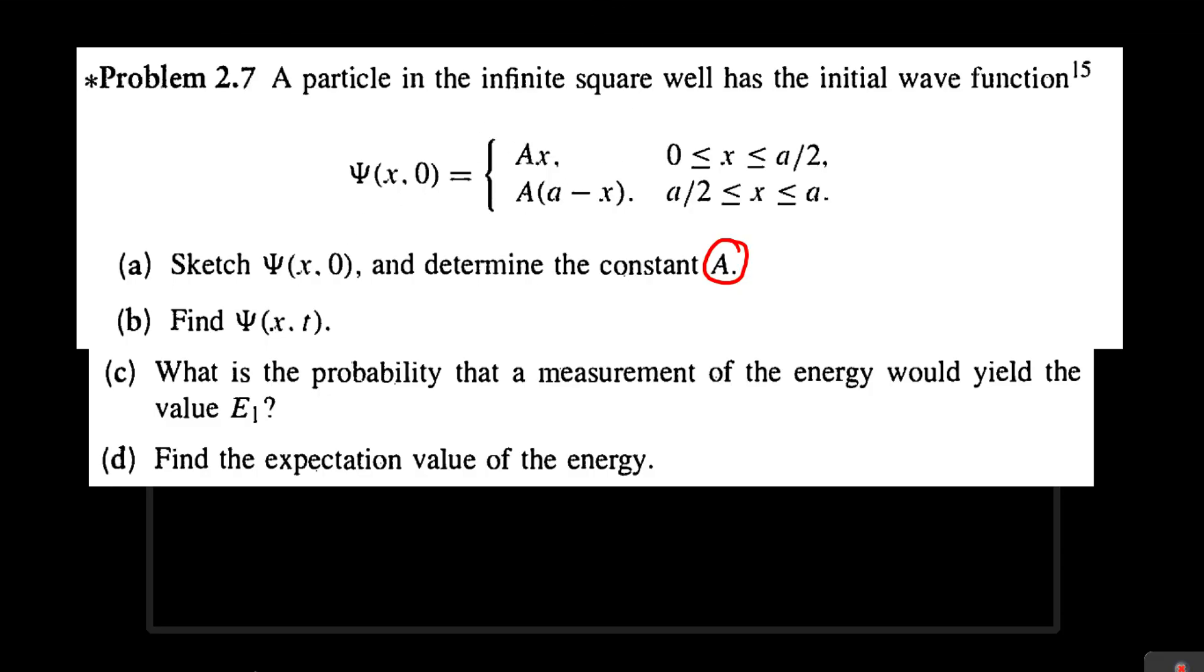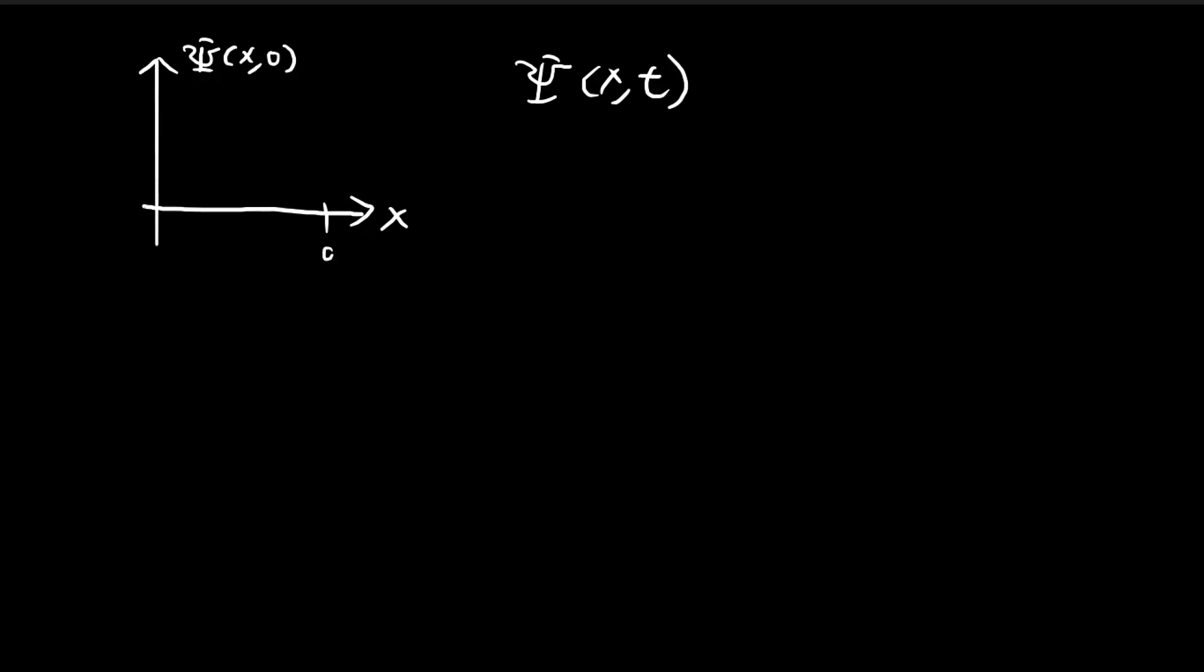First of all, let us try to visualize what this initial wave function looks like. So you have your x-axis, and then this axis will be the initial wave function. So it's evaluated when t is equal to 0. So the complete wave function has two variables, x and t. And we're told that this wave function looks something like this.